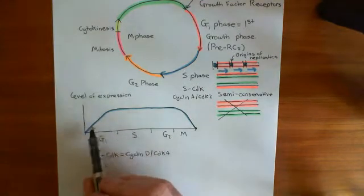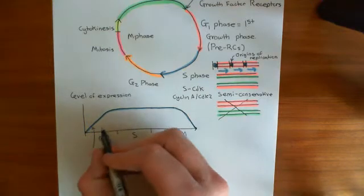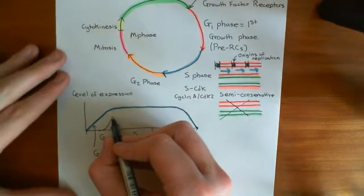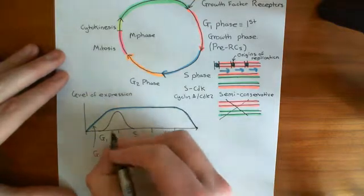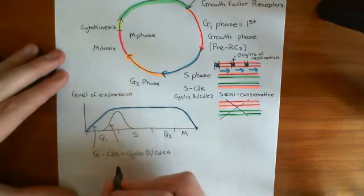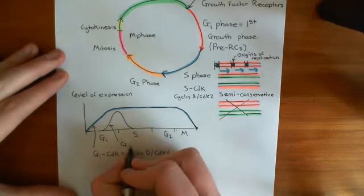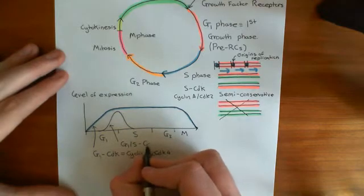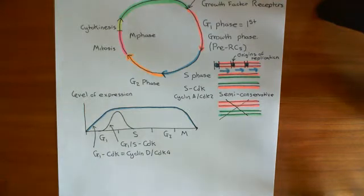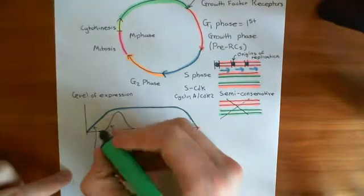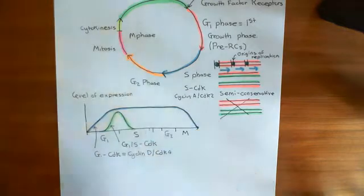One of the things contributing to the rise in the activity of G1 CDK towards the G1/S checkpoint — which then drives you through the checkpoint by phosphorylating and inactivating the retinoblastoma protein — is a rise in another CDK known as the G1/S CDK, which spikes at the checkpoint between G1 phase and S phase.